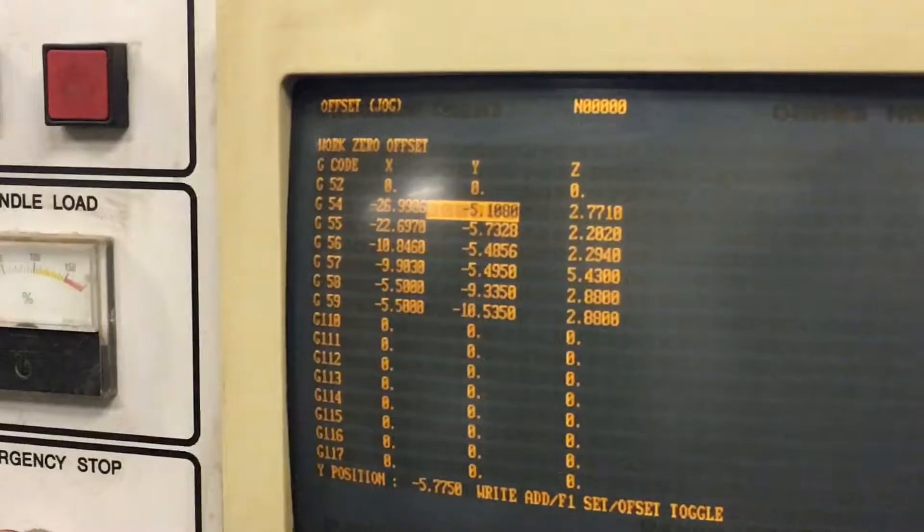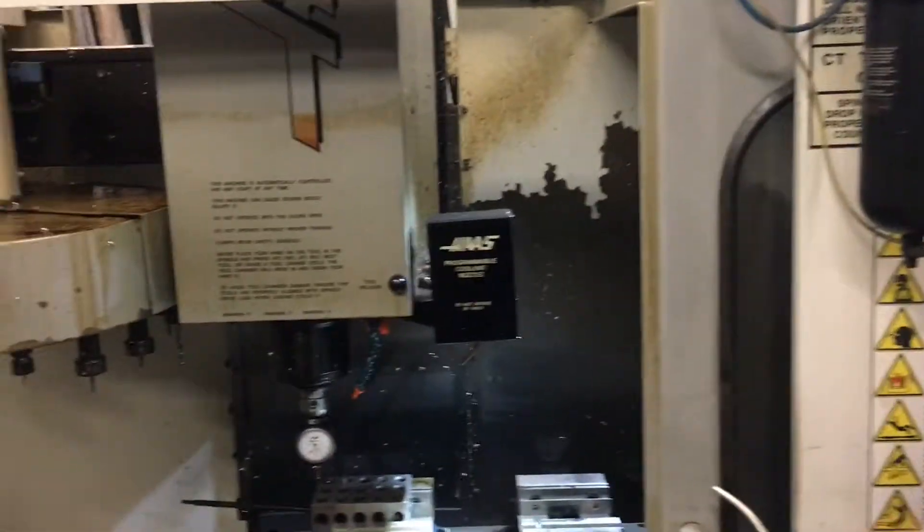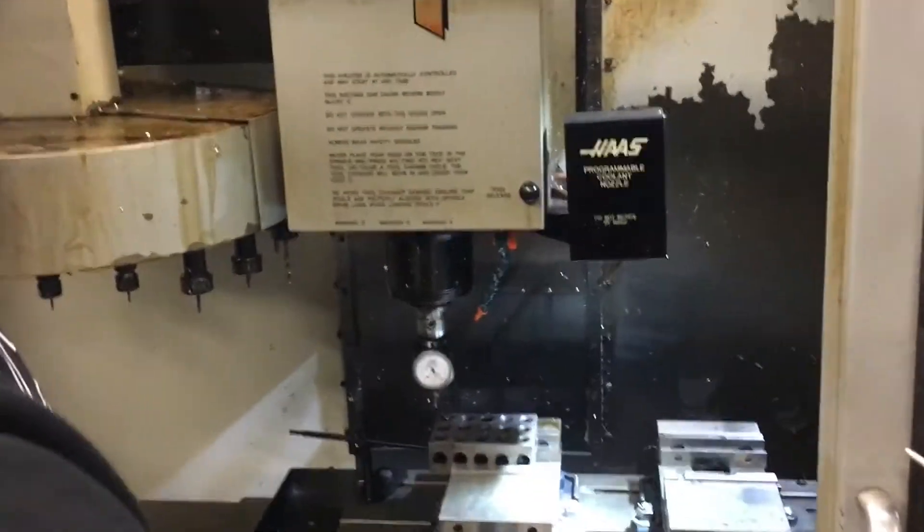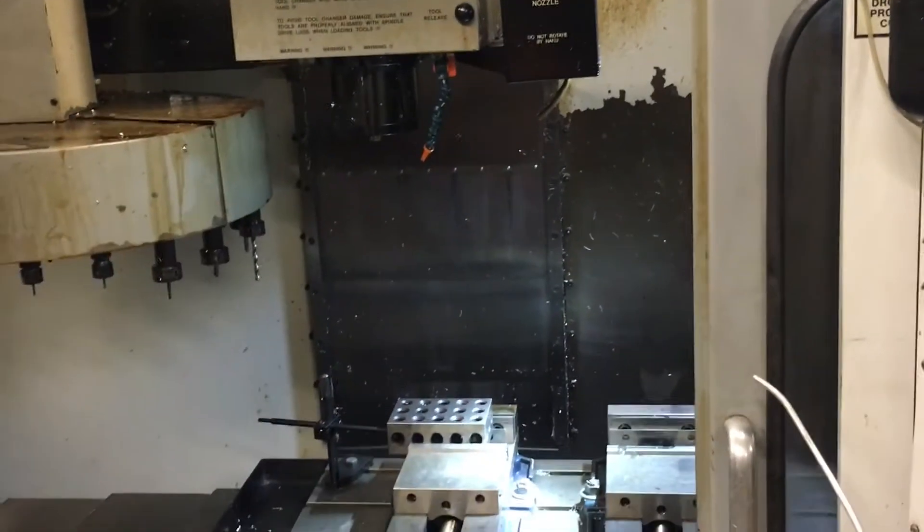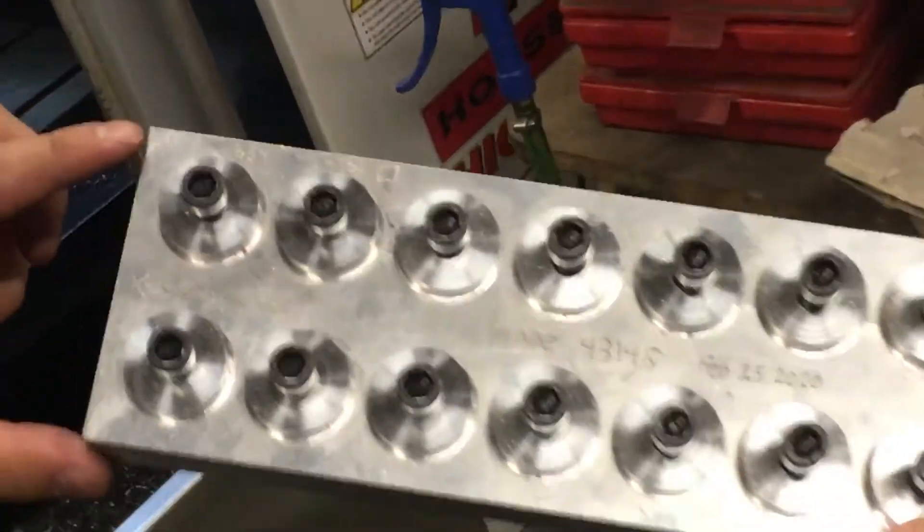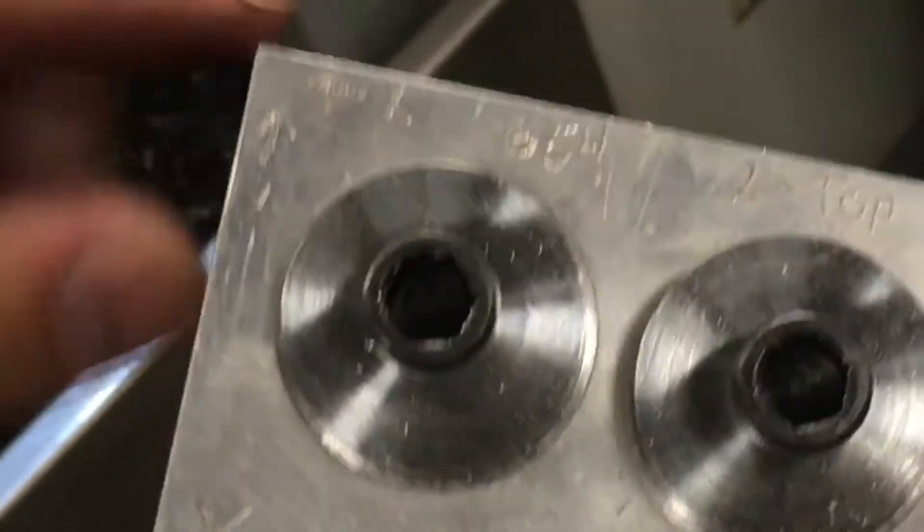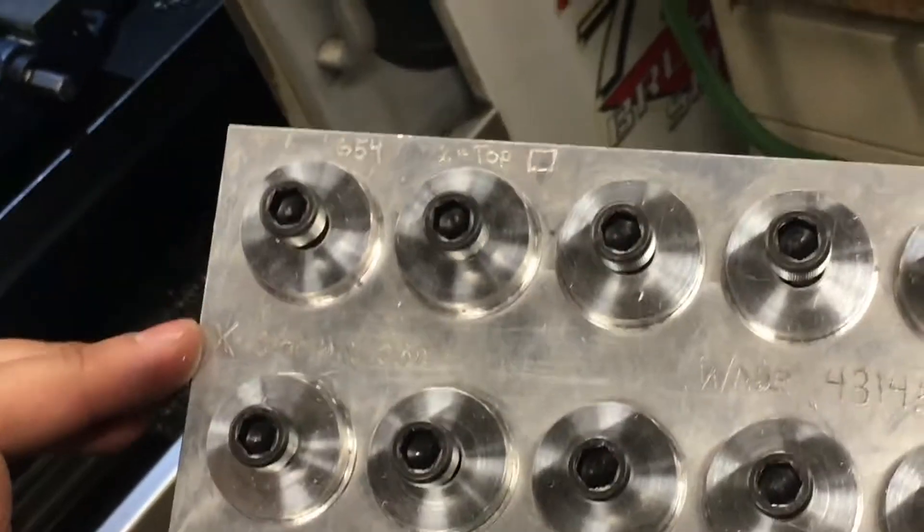So all that's left is to check our Z. We're just going to go up and take this out. So you can see right here, our X and our Y on our G54 is zero here. And then the Z zero is our top.